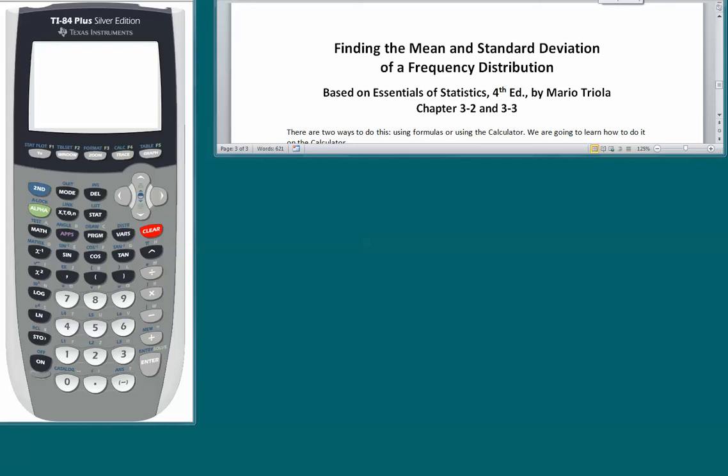This is Part 2 of a presentation on frequency distributions. In Part 1, we talked about how to construct a frequency distribution. In this part, we're going to find out how to find the mean and standard deviation of a frequency distribution. This is based on the Triola textbook chapters 3-2 and 3-3.